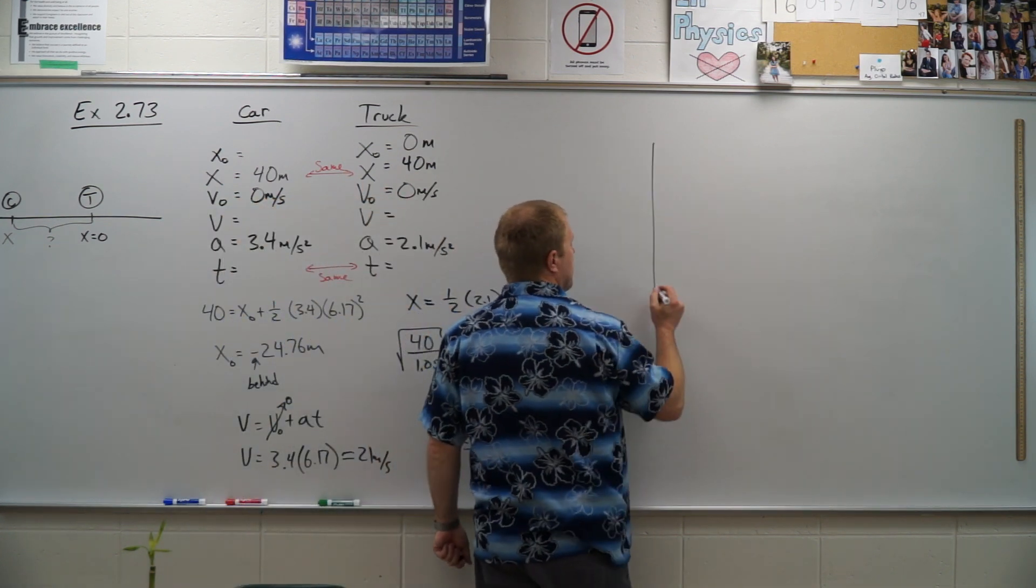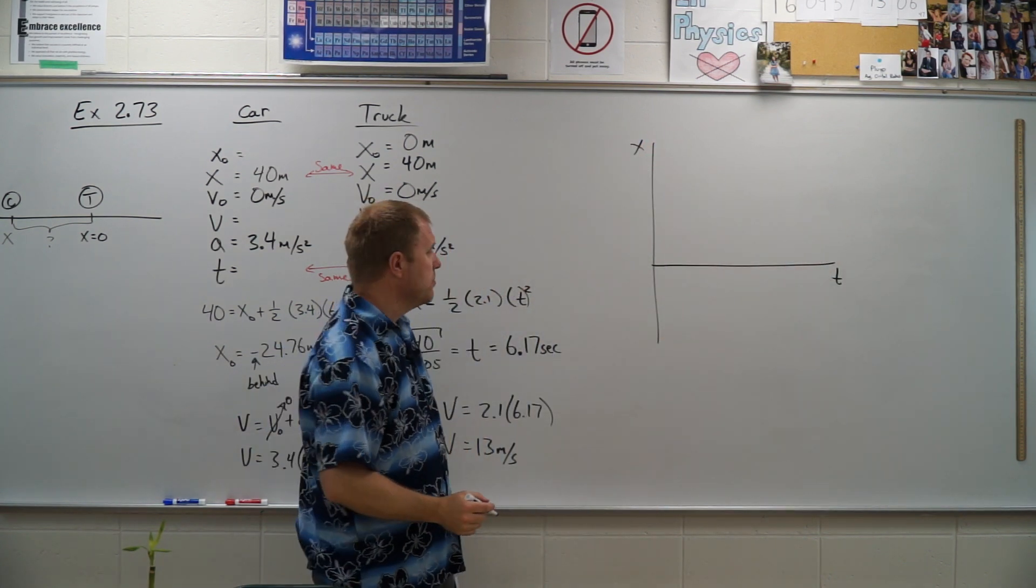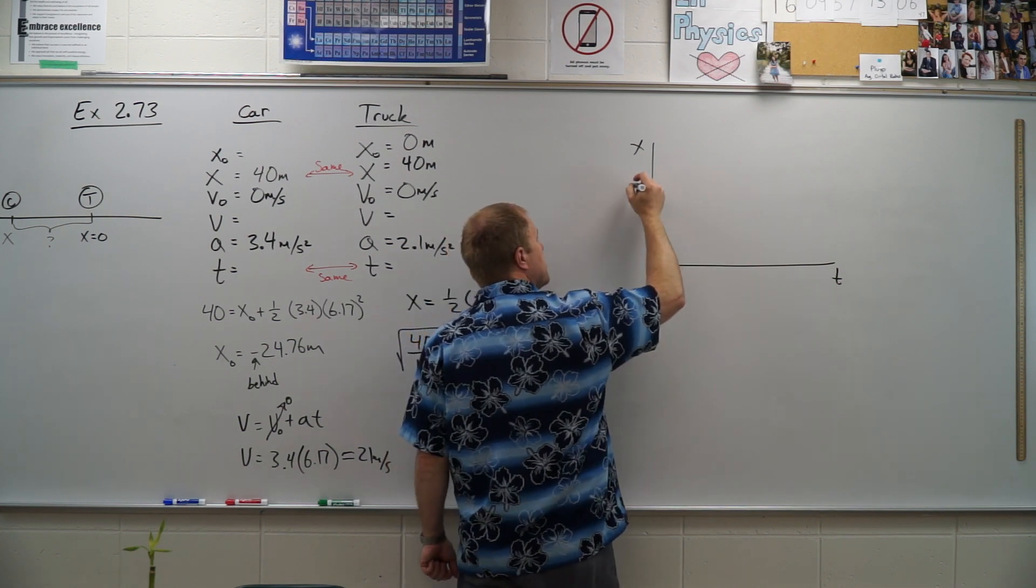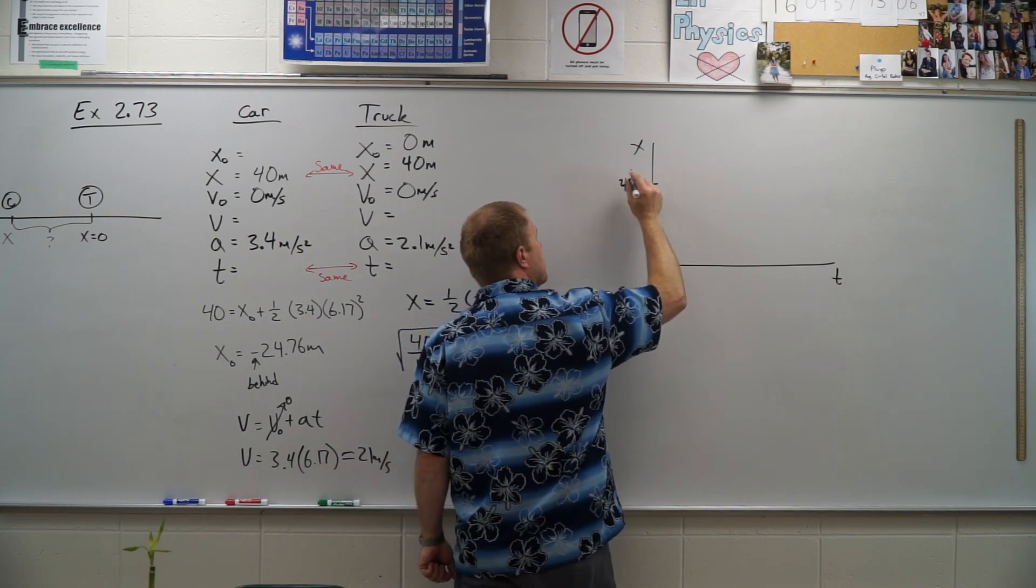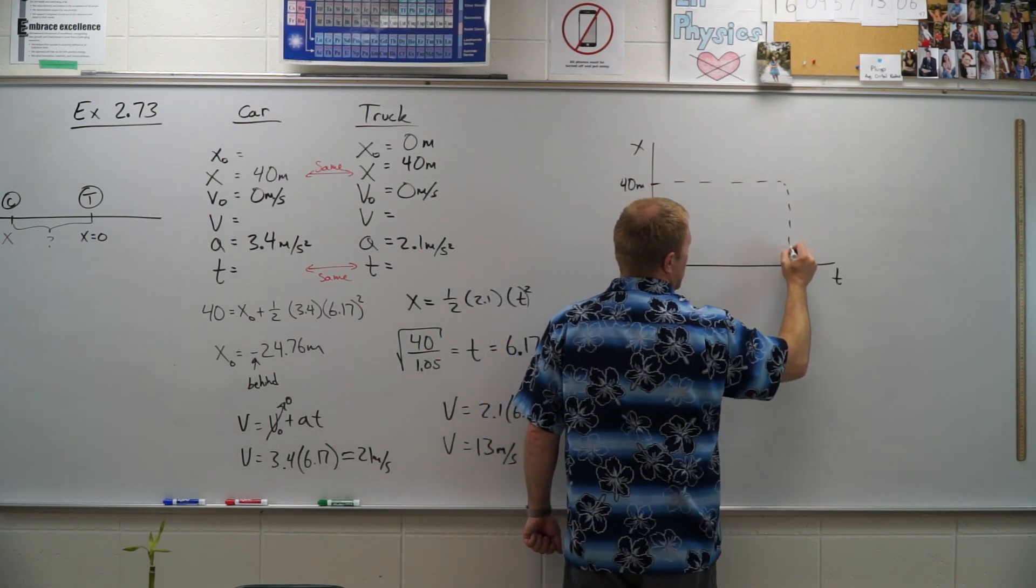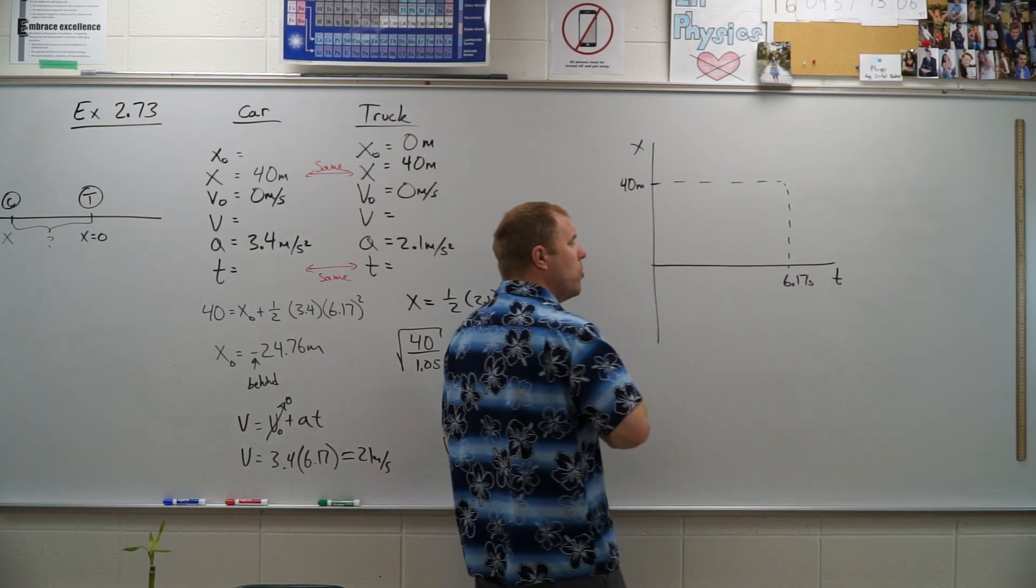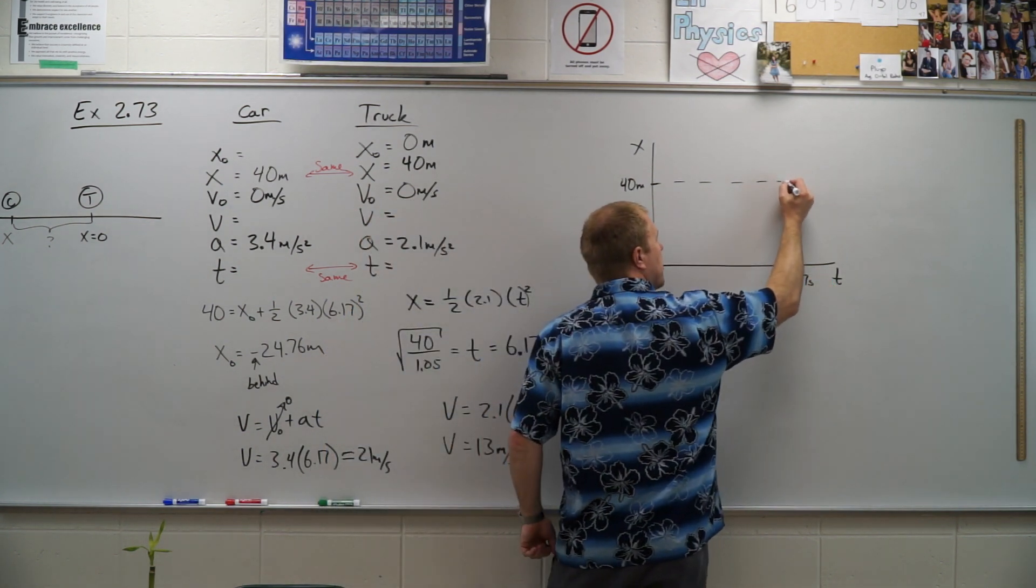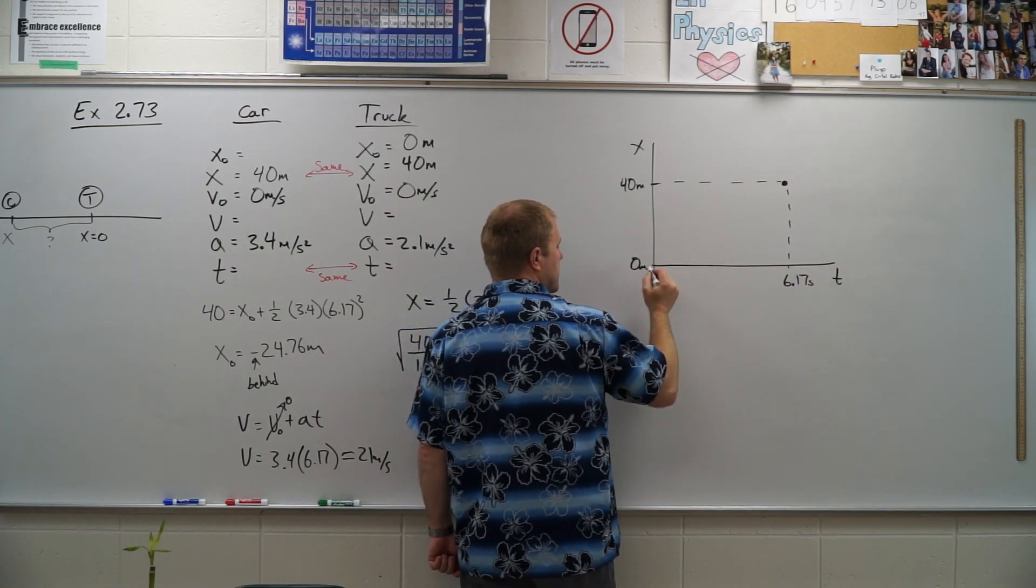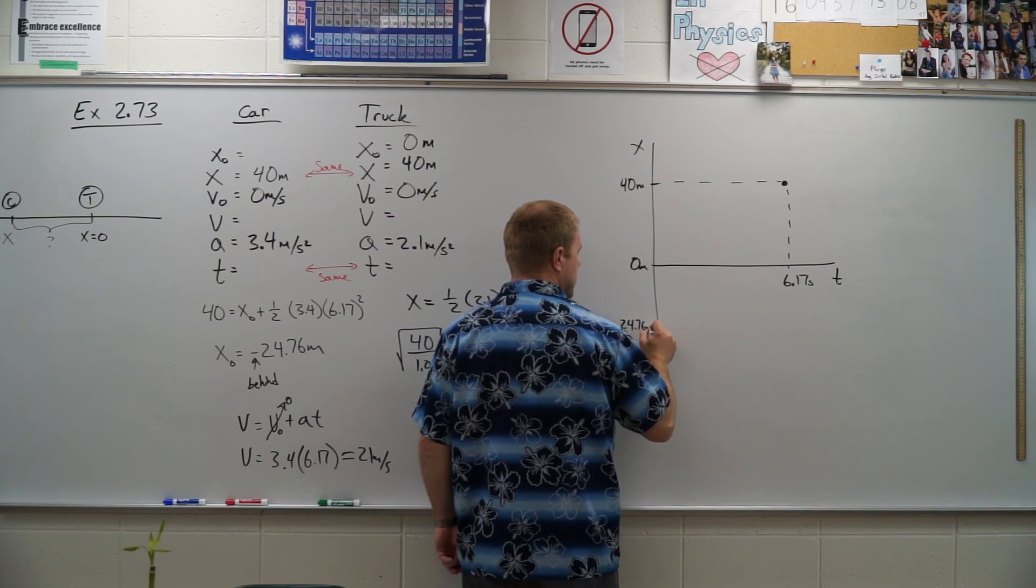So we have our position versus time graph, and we know the initial position of the truck starts out there. We know the final position of the truck is at 40 meters, and we know the time for that position is 6.17 seconds. We know that both the truck and the car are going to cross here. We know the truck starts at zero meters and the car starts at negative 24.76 meters.